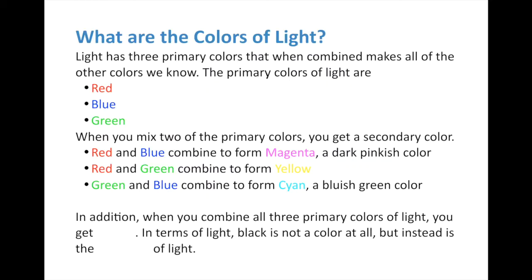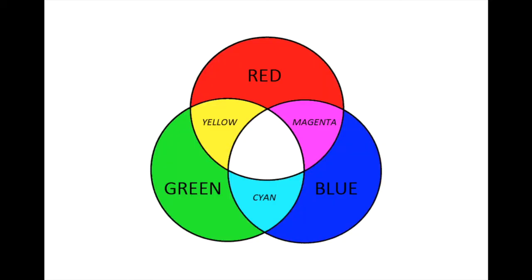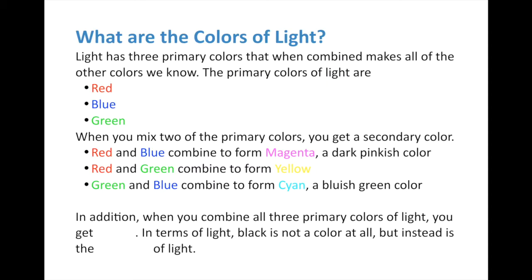Let's create our third secondary color by mixing green and blue. Green and blue form a color called cyan, which is a bluish-green color - kind of a light blue. All of these colors are computer-generated based on perfect mixtures of red, blue, and green. Whenever we combine all the primary colors of light you get white light. As for black - black is actually not a color when we talk about light; it's the absence of light. Objects appear black because their surface absorbs all of the light and nothing reflects off.